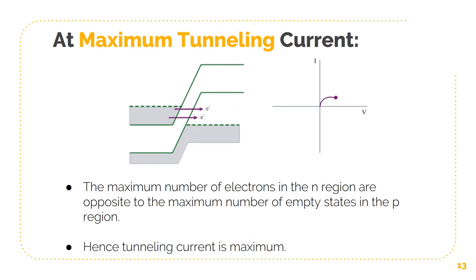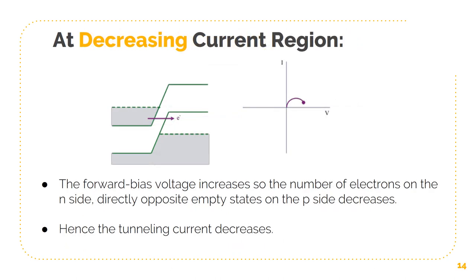At maximum tunneling current, with a slightly larger forward bias voltage, the maximum number of electrons in the N region will be opposite to the maximum number of empty states in the P region, producing a maximum tunneling current. At the decreasing current region, as the forward bias voltage continues to increase, the number of electrons on the N side directly opposite to empty states on the P side decreases, and the tunneling current will decrease.